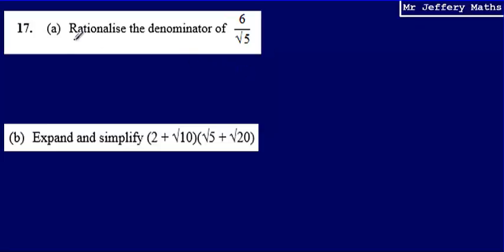What this term means — rationalise the denominator — is it means to get rid of the square root in the denominator of the fraction without changing the value of the fraction.